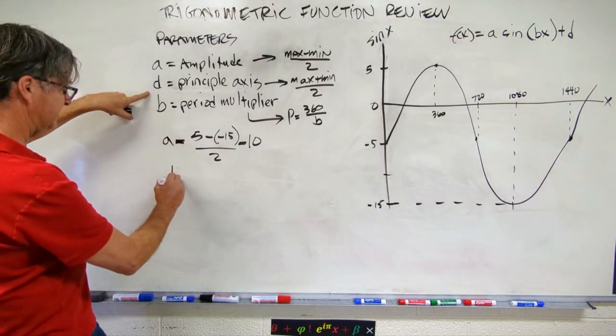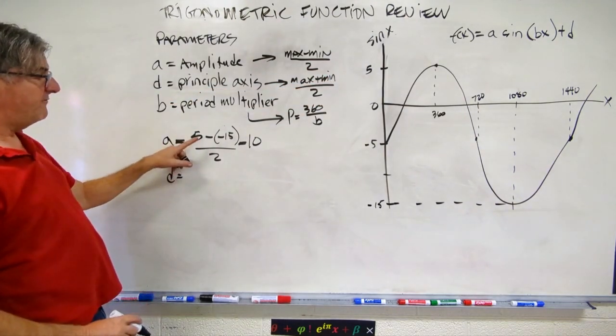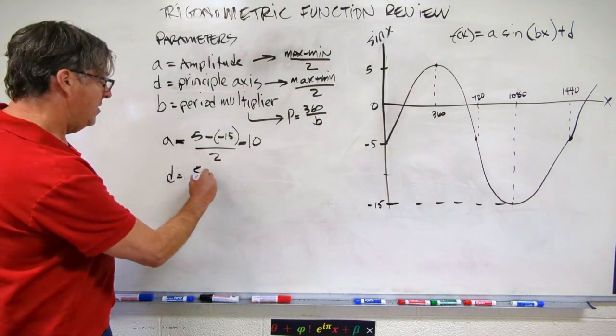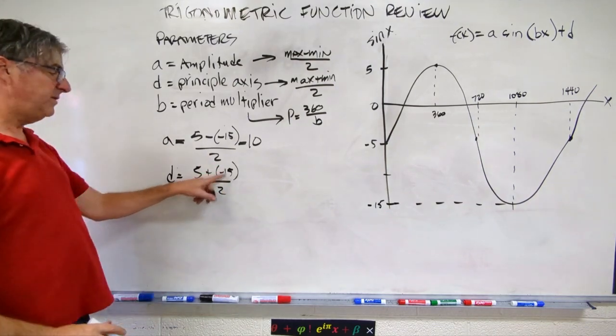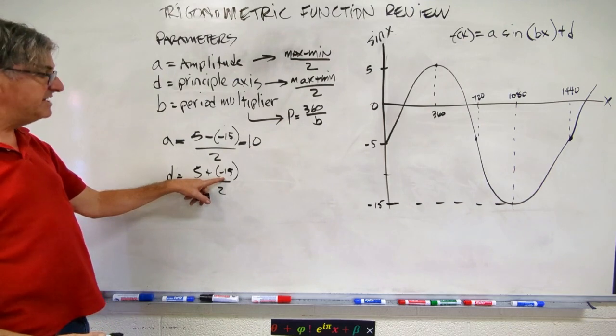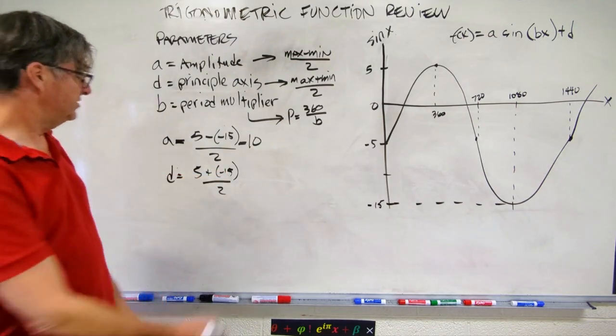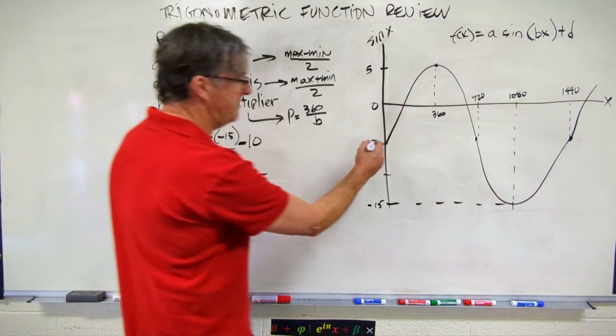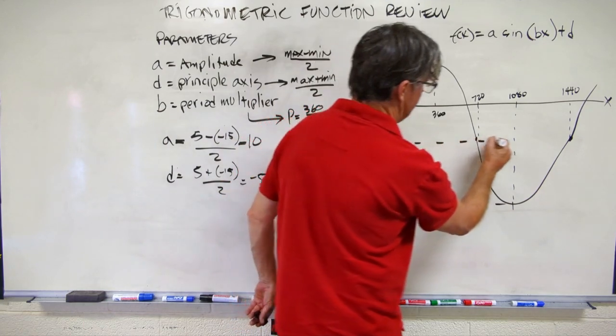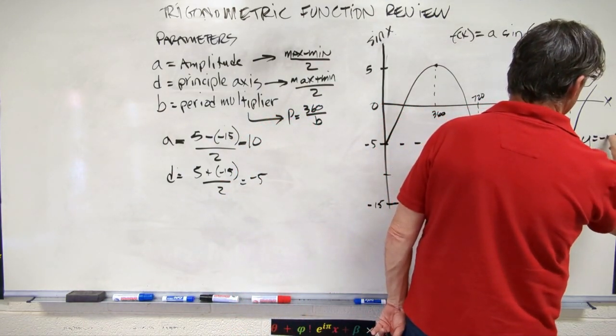So our d, our principal axis, is going to be the max plus the min over 2. So that's going to be 5 plus minus 15 over 2. And 5 plus minus 15 is just 5 minus 15. So that's going to be negative 10 over 2, which is going to be negative 5. So d is negative 5, and check it out. Here's my negative 5.